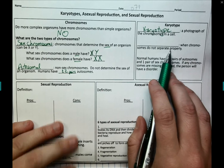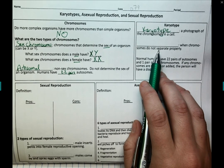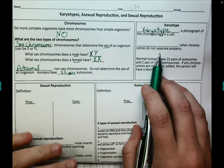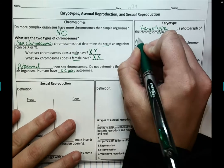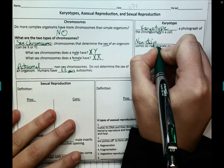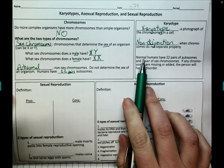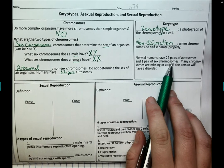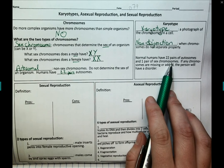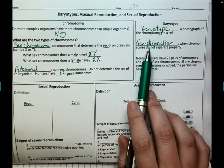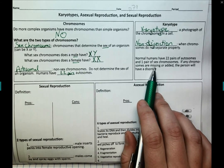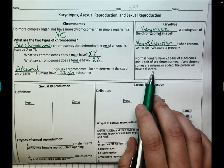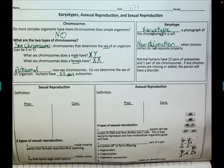When chromosomes do not separate properly — we talked about in meiosis how our homologous chromosomes go through meiosis one and meiosis two — if the chromosomes do not separate properly, we call this non-disjunction. A normal human has 22 pairs of autosomes and one pair of sex chromosomes, not missing anything and nothing extra. But if non-disjunction occurred, you might be missing or have additional chromosomes, which could lead to a genetic disorder, and we would be able to see this on a karyotype.